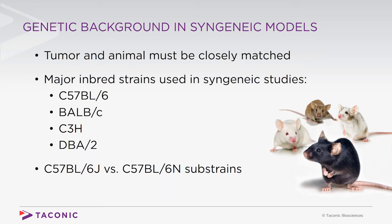However, it is important to note that there are a number of genetic differences between these substrains. These affect functions such as immunology and metabolism, and these may affect the subsequent growth of tumors and the response to therapeutic agents. It is therefore important to validate substrains and specific cell lines in your studies.